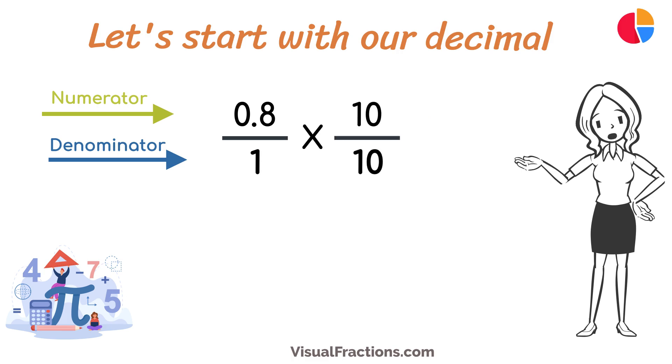So, 0.8 times 10 gives us 8, and 1 times 10 gives us 10. This translates 0.8 to the fraction 8 over 10.